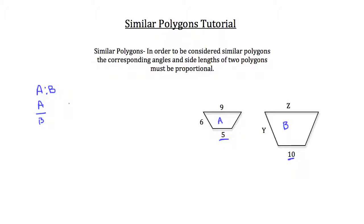The small base of trapezoid A has a length of 5, and the small base of trapezoid B has a length of 10. So in proportion, they're in a 1 to 2 proportion ratio to each other. A to B, 1 to 2.